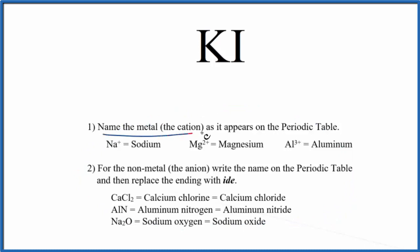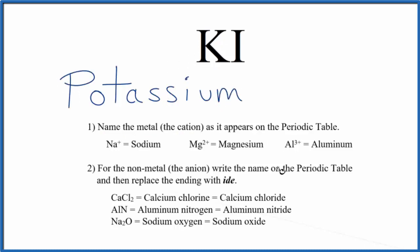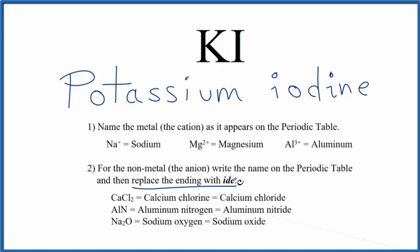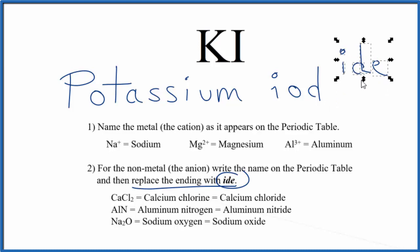We first write the name for the metal — that's potassium — as it appears on the periodic table. So K is potassium. Then for the nonmetal, we write the name as it appears on the periodic table as well, using a small 'i' for iodine, and we replace the ending with '-ide.' So the '-ine' is replaced with '-ide.' The name for KI is potassium iodide.